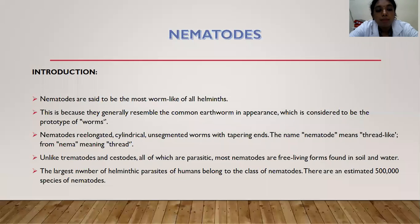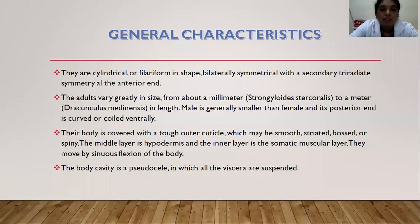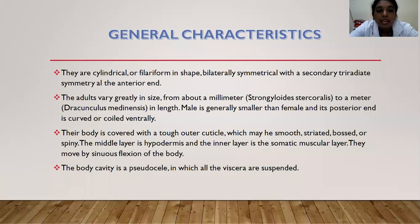The largest number of helminthic parasites of humans belongs to the class of nematodes. There is an estimated 500,000 species of nematodes. They are cylindrical or filiform in shape, bilaterally symmetrical with a secondary triradiate symmetry at the anterior end. The adults vary greatly in size from about a millimeter, as found in Strongyloides stercoralis, to a meter, as in Dracunculus medinensis.